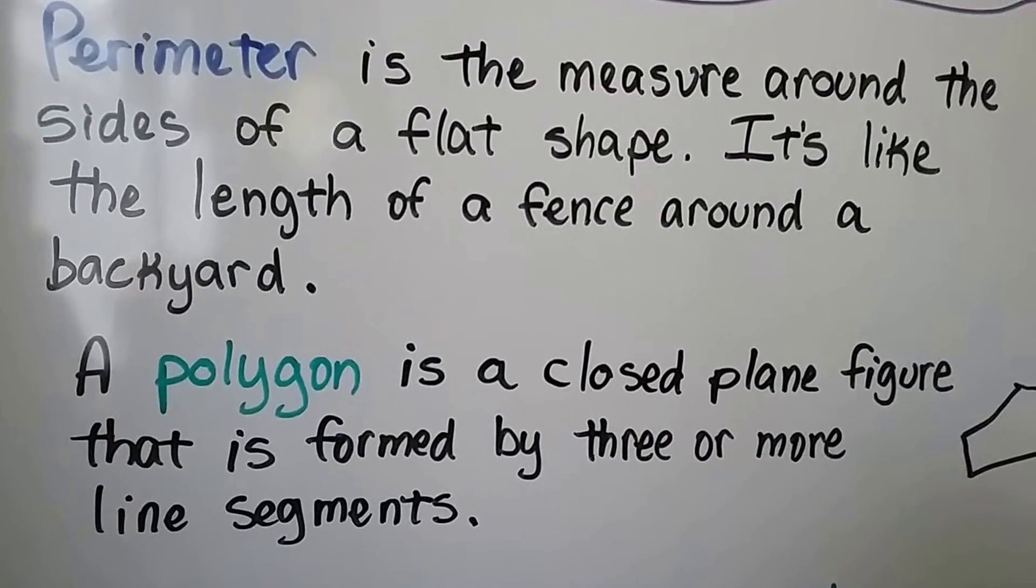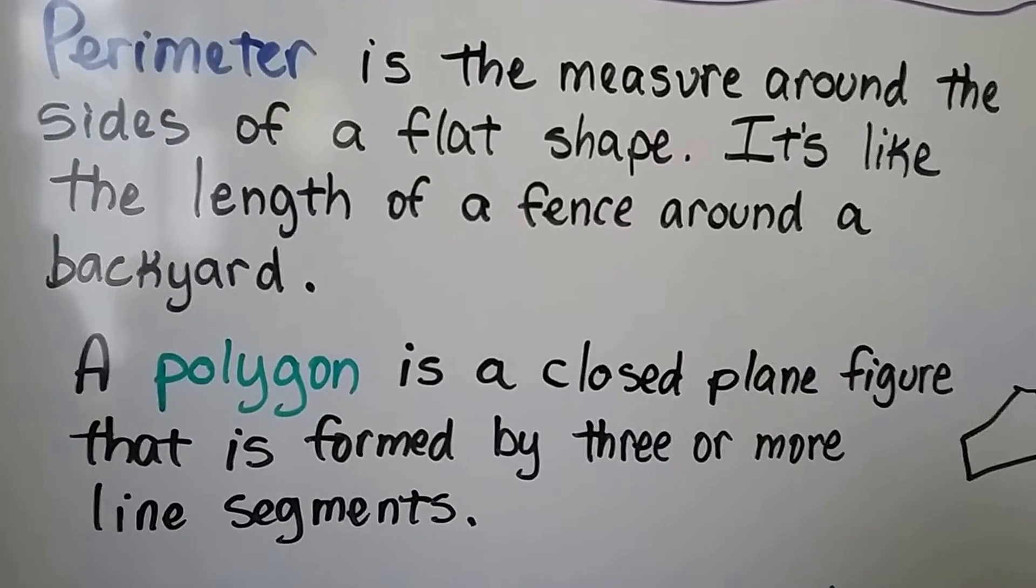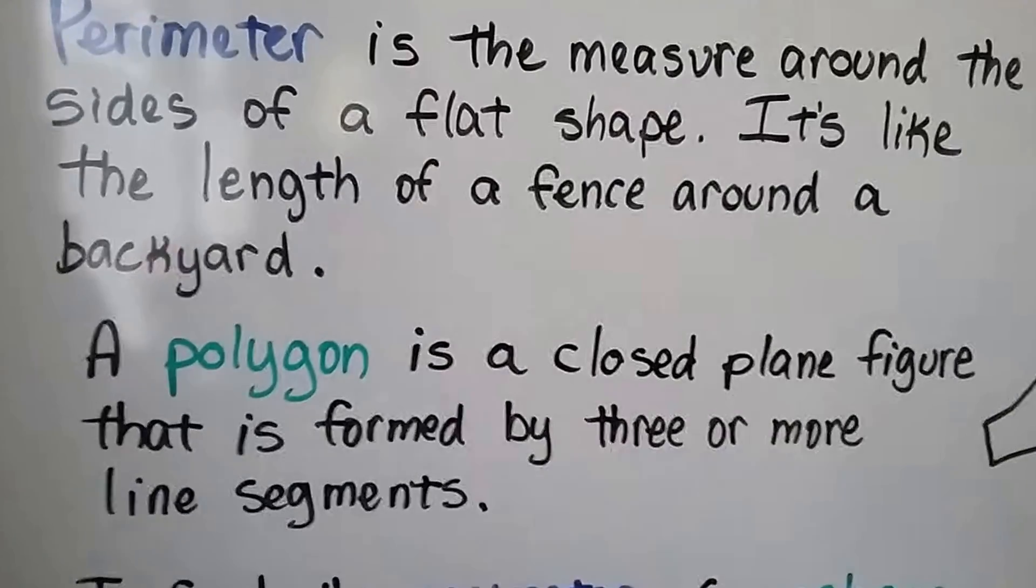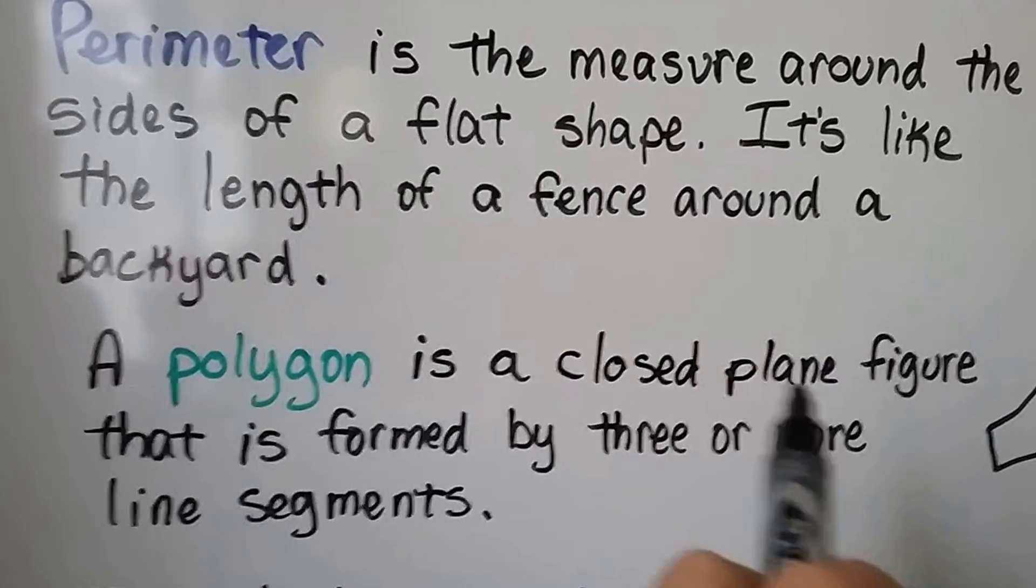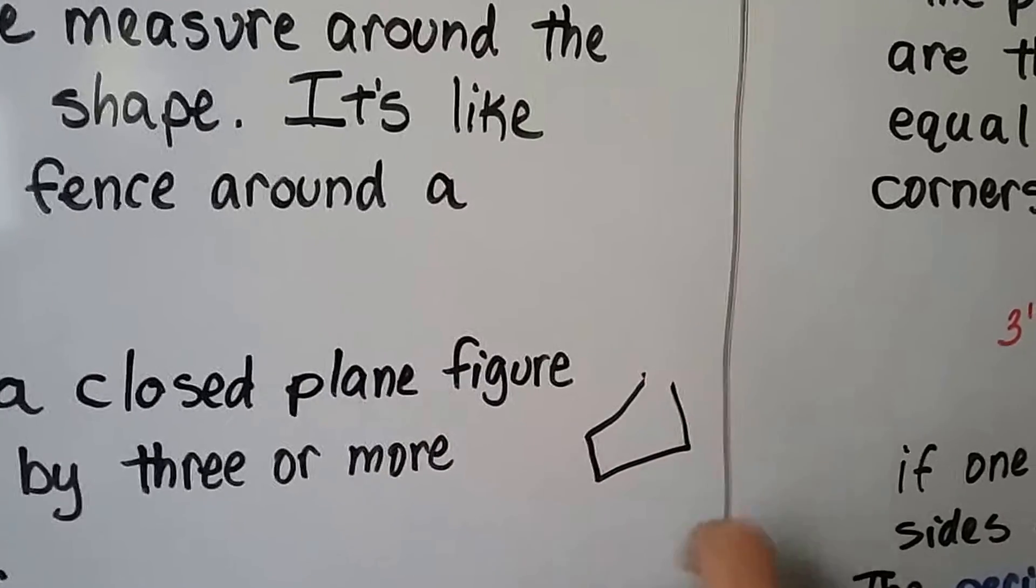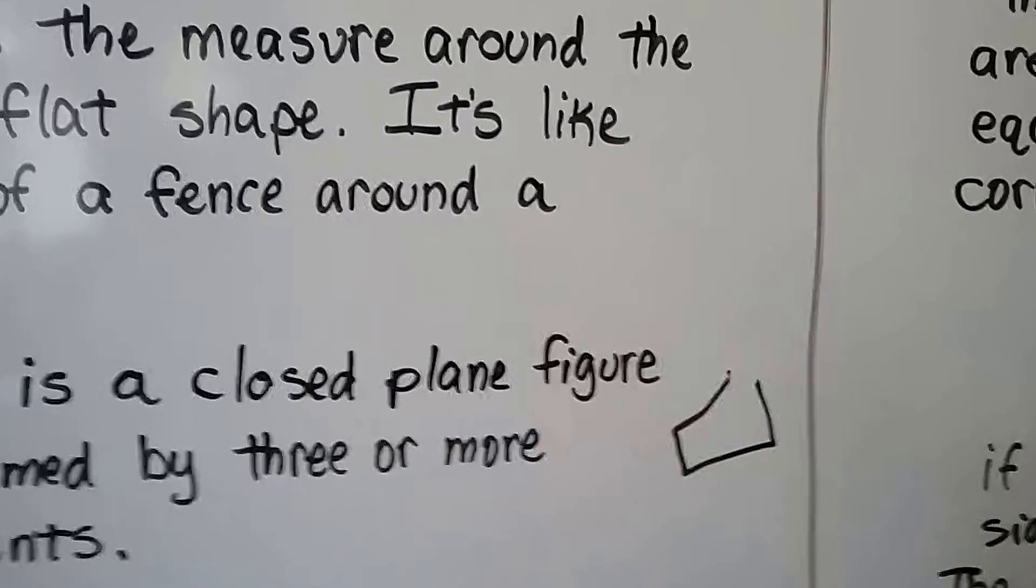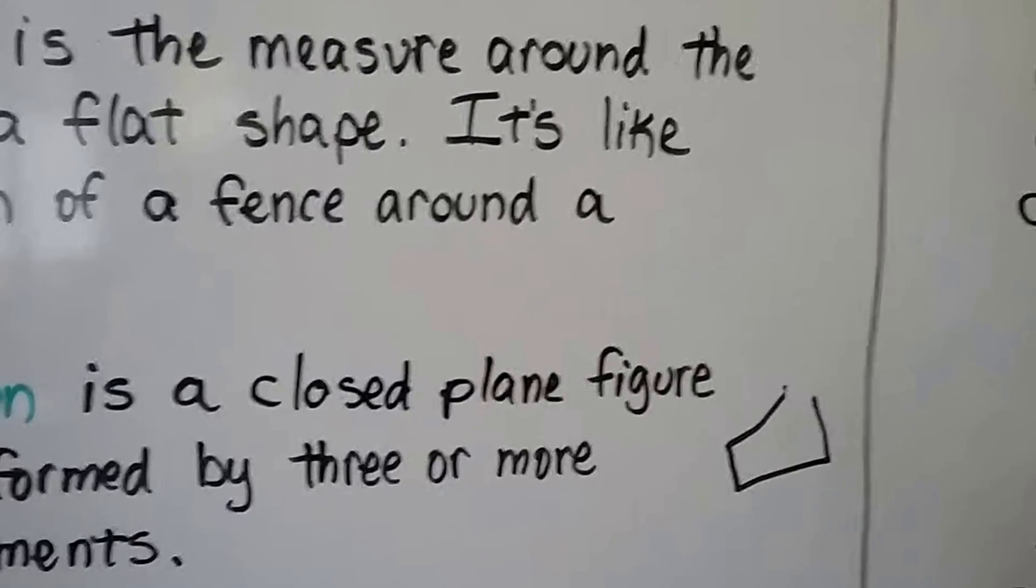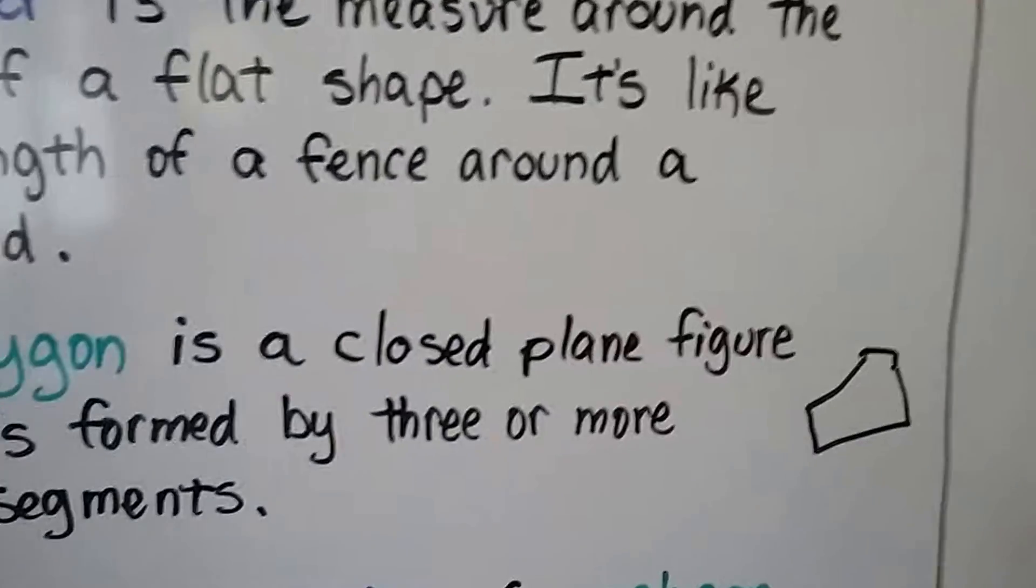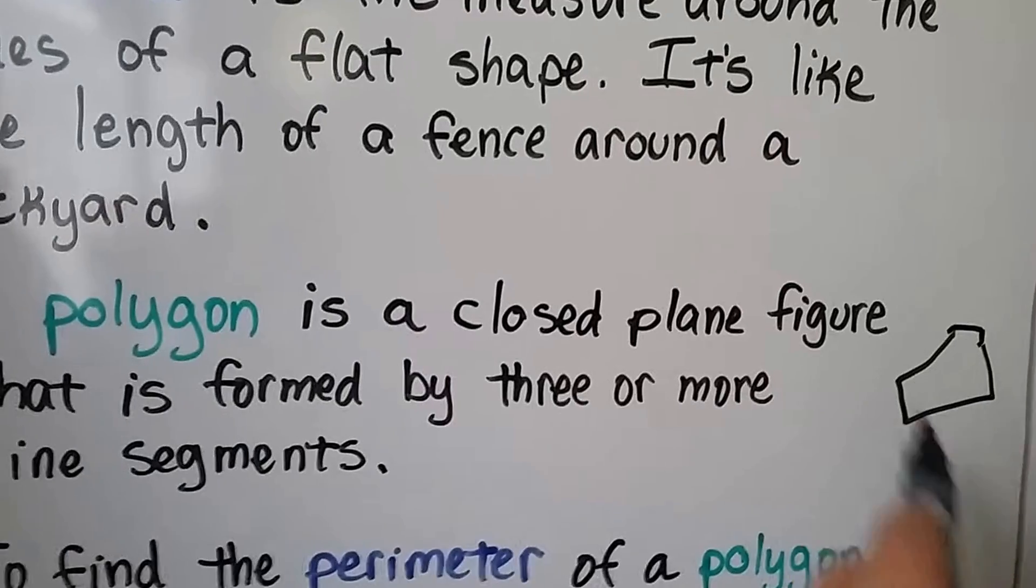A polygon is a closed plane figure that is formed by three or more line segments. So the flat shape is a plane and by closed they mean like this. It wouldn't be open. It wouldn't have one of the sides open. That's an open figure. We're talking about perimeters of closed figures, almost like sheep would be inside of a fence and they couldn't get out.